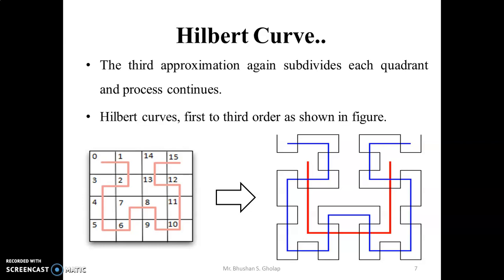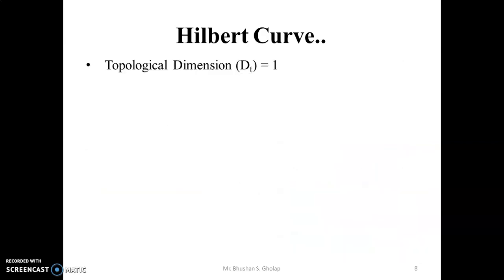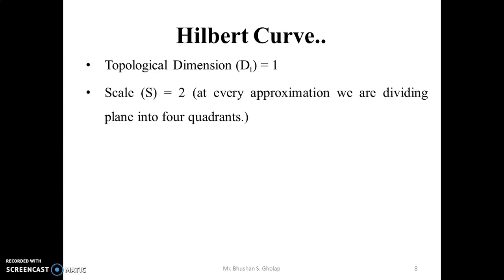Topological dimension of the Hilbert curve, that is Dt, is equal to 1. Topological dimension Dt must equal 1. At each subdivision, scale S changes by 2. That is, at every approximation, we are dividing the plane into 4 quadrants.